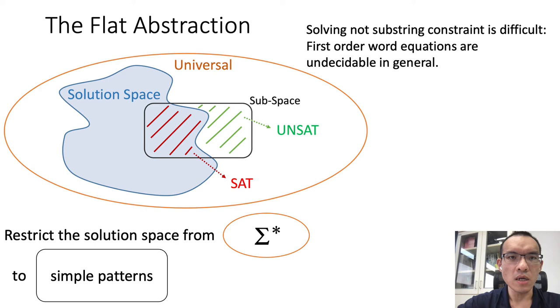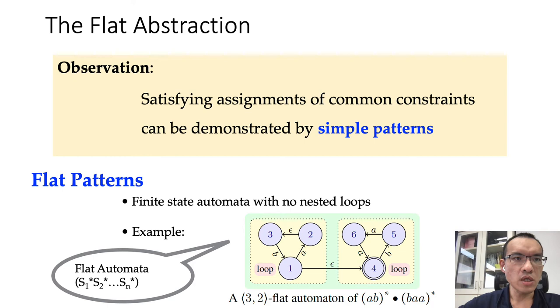One idea to simplify the problem is abstraction. In our past experience in solving basic string constraints, which restricts the solution space of a string constraint from sigma star or possible strings to strings following some simple pattern, is very useful. The flat abstraction is based on the observation that satisfying assignments of common string constraints can be demonstrated by simple patterns. This pattern, we call it flat patterns.